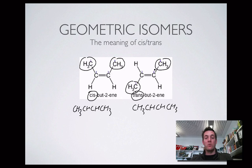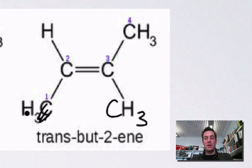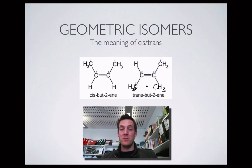You might wonder what happens if one of those methyl groups were replaced — say one is H and the other is CH₃. Could you still have geometric isomers? No, because it doesn't matter which way round the groups are — you'll always have H across from CH₃ or on the same side. So to have geometric isomers, you must have two different groups attached to the carbons at each end of the double bond. If you see a molecule with two different groups at either end of the double bond, you'll have geometric isomers and need to use the prefixes cis and trans.